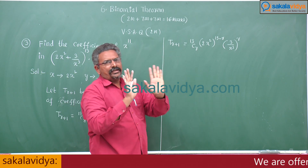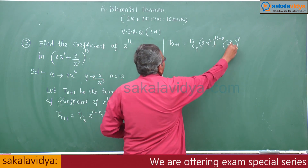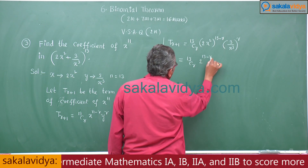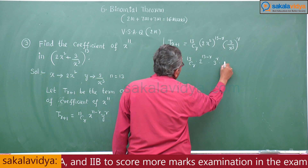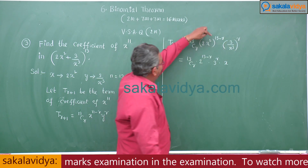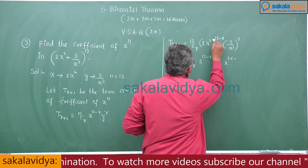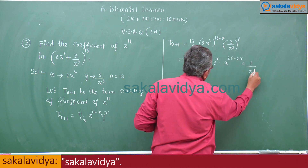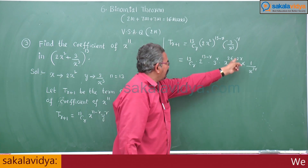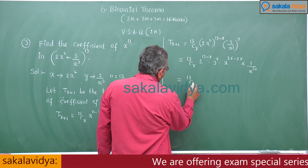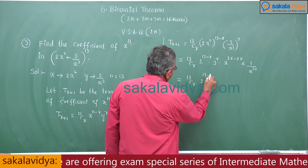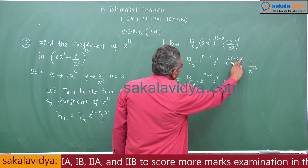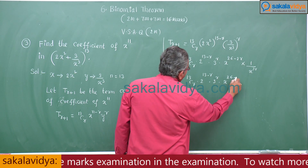Now, separate the numerical constants: 13Cr · 2^(13−r) · 3^r · x^(2(13−r)) · (1/x^(3r)). Simplifying the x powers: 2×13 = 26, so the exponent of x becomes 26 − 2r − 3r = 26 − 5r. So T(r+1) = 13Cr · 2^(13−r) · 3^r · x^(26−5r).